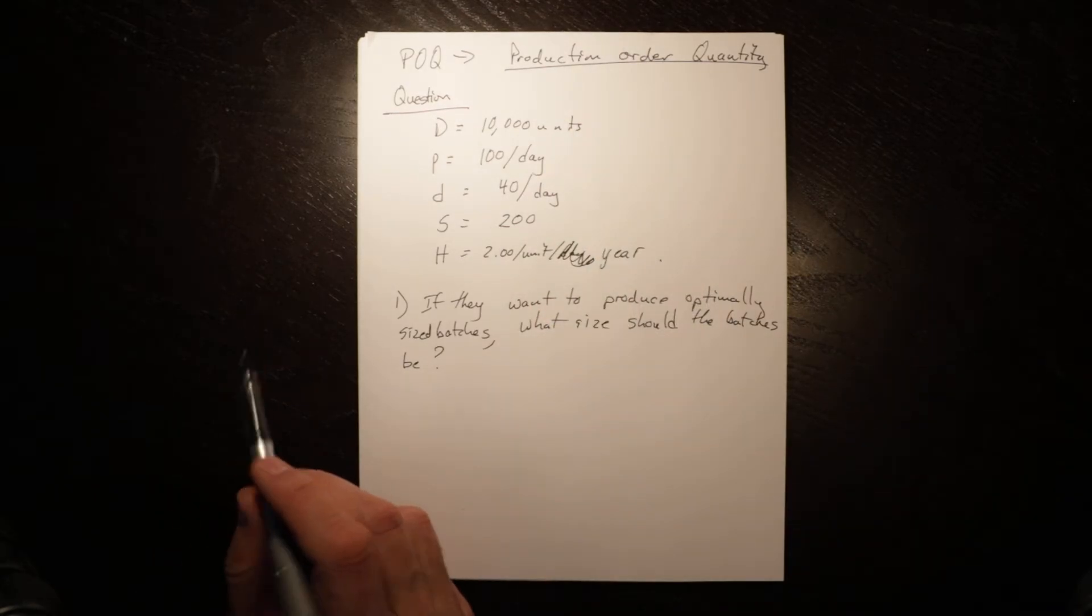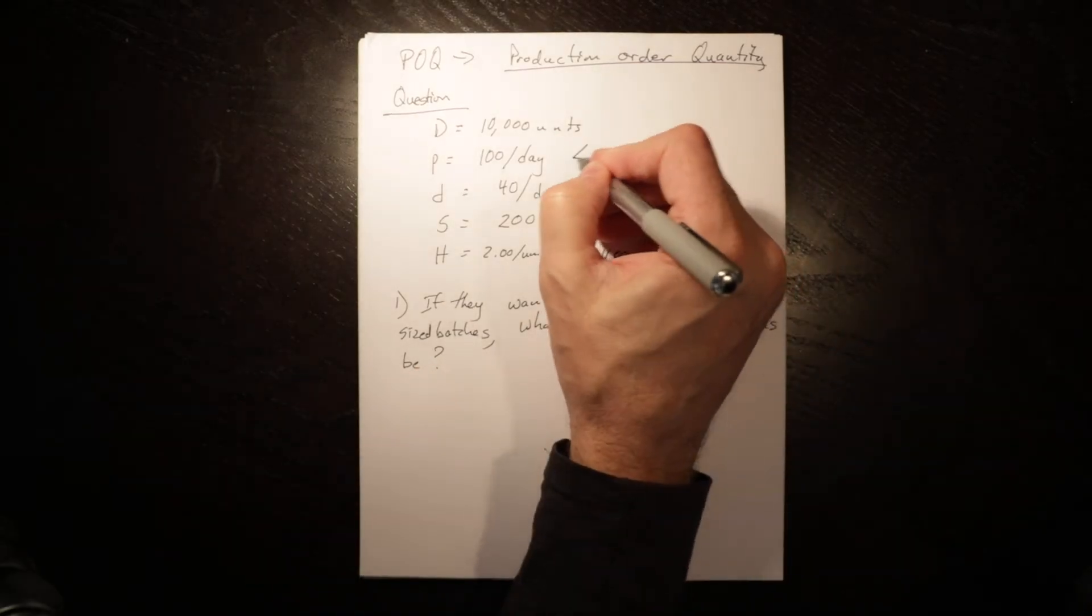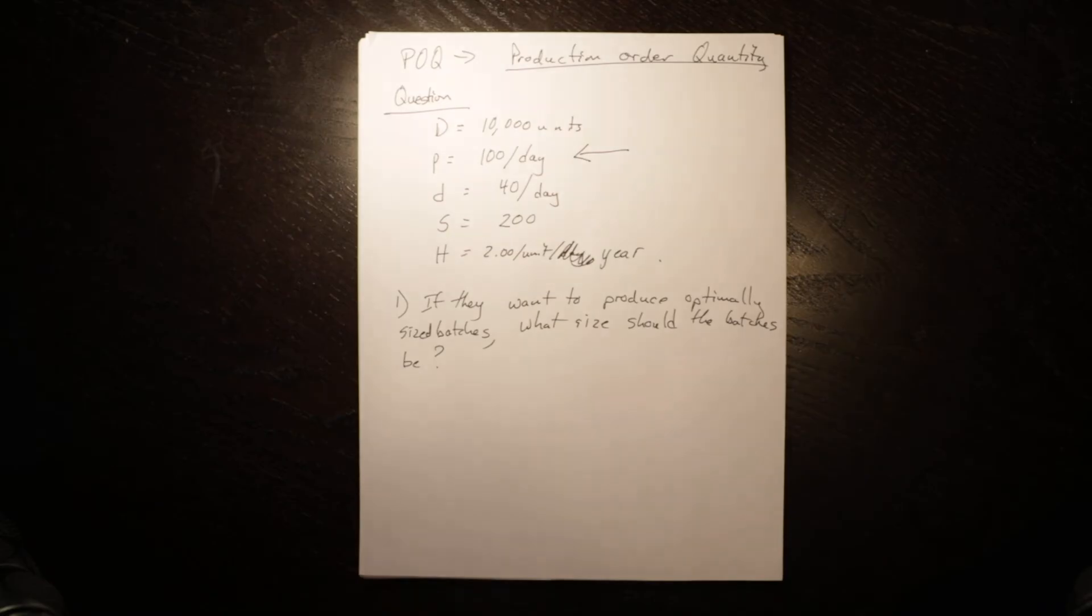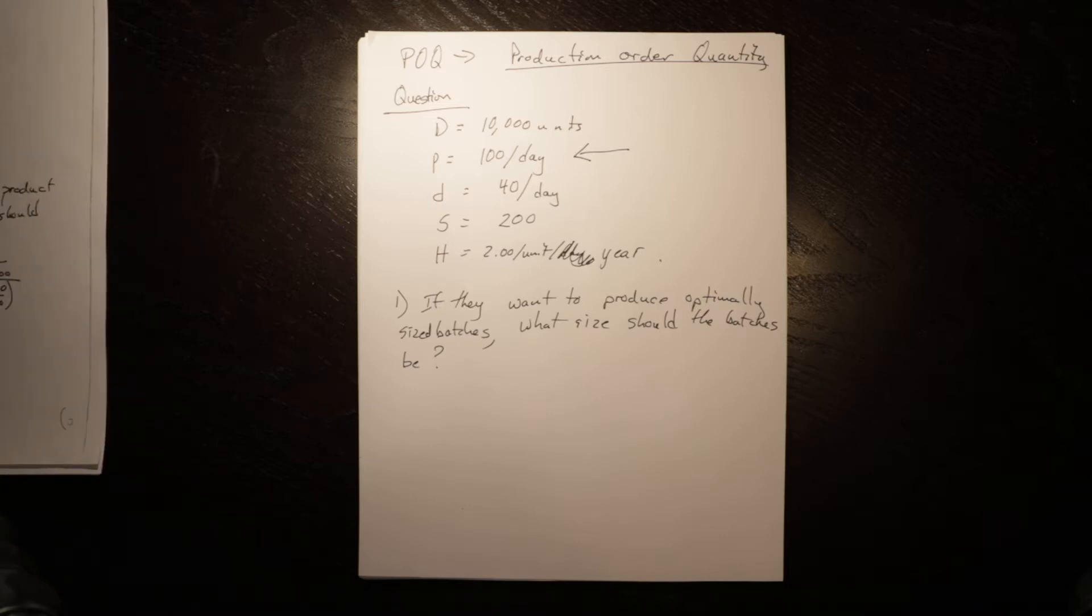Now in this circumstance you know it's a production order quantity or POQ problem because that's how I started the video. But I would highlight if you got this question, the way to know that this is a production order quantity question is that you have a production rate. If you don't have a production rate, then in that circumstance you are most likely an economic order quantity problem rather than a production order quantity problem.